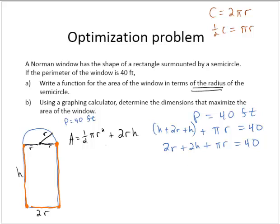Now I'm going to get rid of that h in the area function. So let's solve for h. 2h equals 40 minus 2r minus πr. h would equal (40 - 2r - πr) over 2.